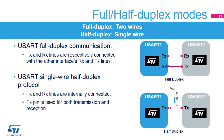The USART supports full duplex communication, where TX and RX lines are respectively connected with the other interface's RX and TX lines. The USART can also be configured to follow a single-wire half-duplex protocol, where the TX and RX lines are internally connected. In this mode, only the TX pin is used for both transmission and reception. The TX pin is always released when no data is transmitted, acting as a standard I/O in idle or reception modes. The I/O must be configured so that the TX pin is set as an alternate function open drain with an external pull-up.